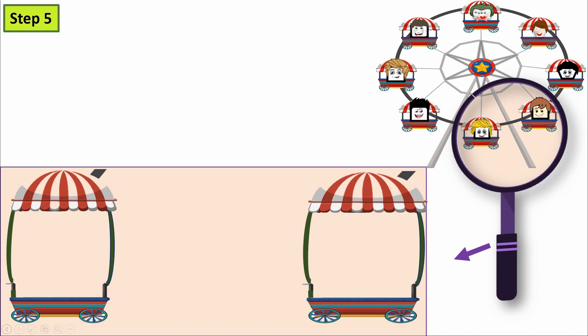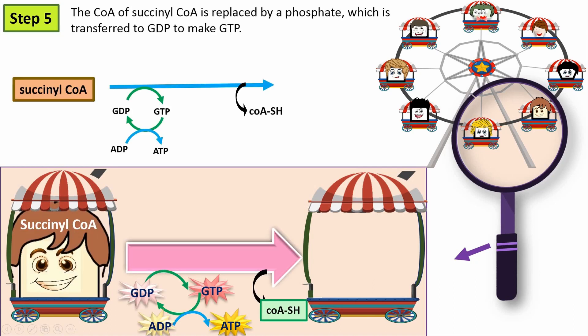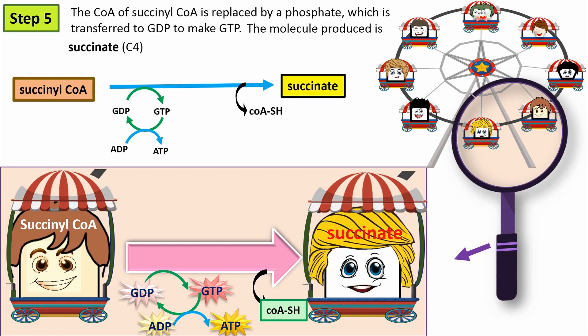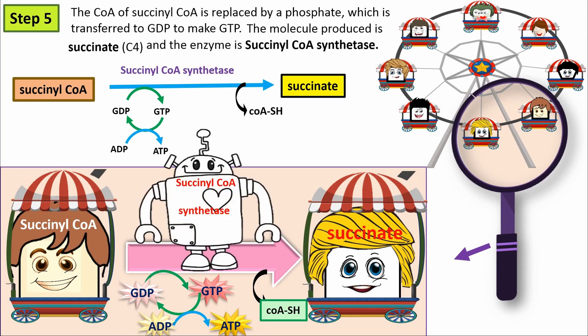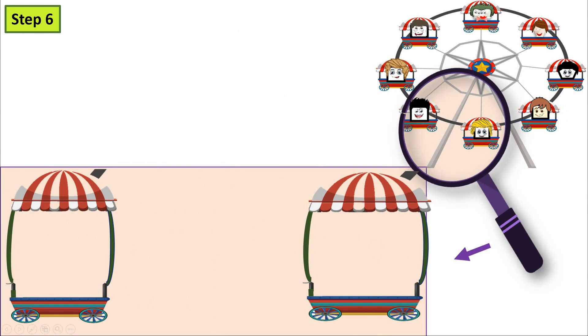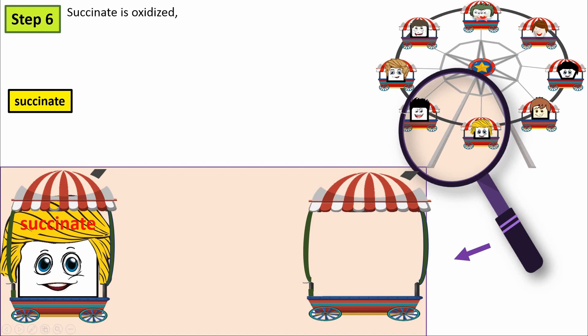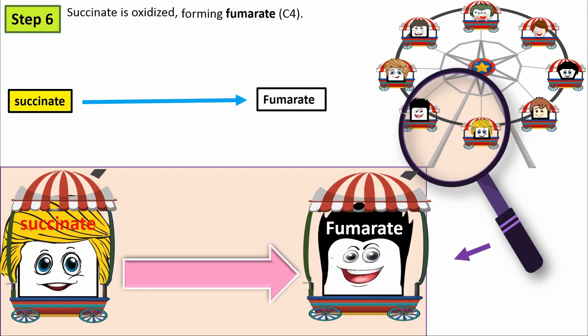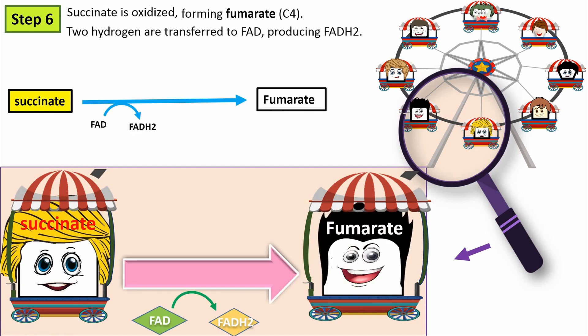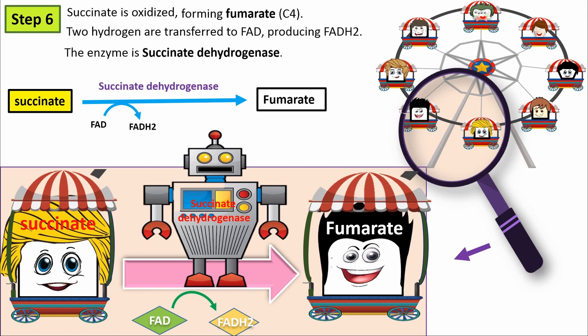Step five: The CoA of succinyl-CoA is replaced by a phosphate, which is transferred to GDP to make GTP. The molecule produced is succinate, and the enzyme is succinyl-CoA synthetase. Step six: Succinate is oxidized, forming fumarate. Two hydrogens are transferred to FAD, producing FADH2. The enzyme is succinate dehydrogenase.